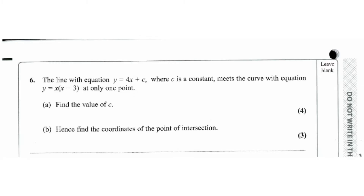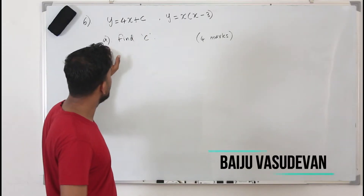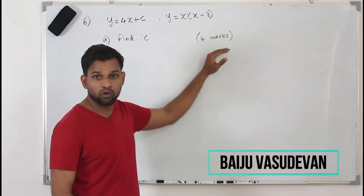Question number six. It says y equals 4x plus c. The line with the equation y equals 4x plus c meets the curve y equals x into x minus 3 at only one point. We need to find the value of c, and part A has four marks.